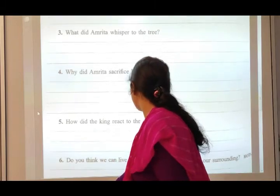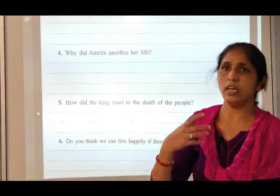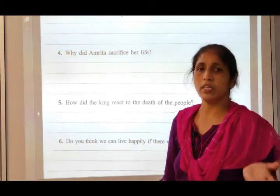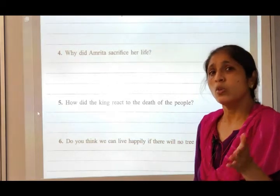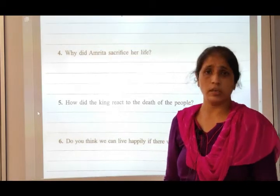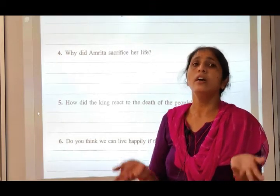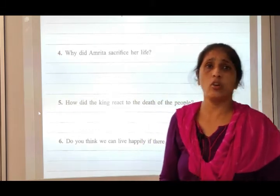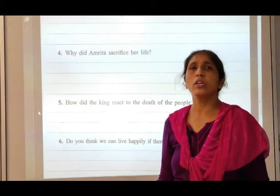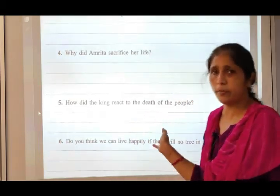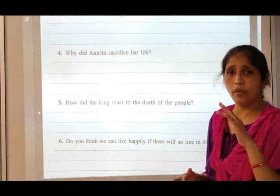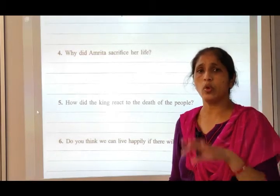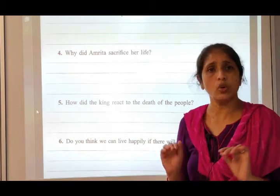How did the king react to the death of the people? The king's men had gone to cut wood for the palace. Amrita, her daughters, and the villagers refused to leave the trees despite requests, so they were harmed. When the king learned that so many people had died, he felt very bad and reacted strongly. He then ordered that from now onwards no trees and no animals in this area would be harmed.